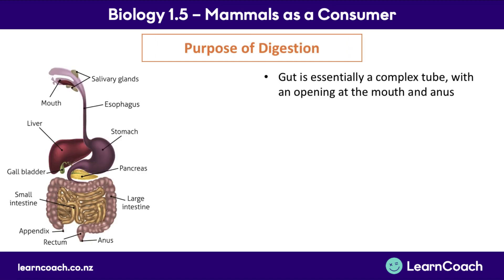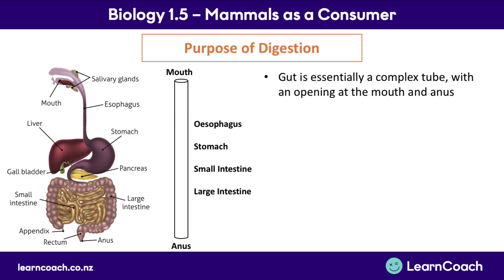Now let's look at the why. The gut is essentially a complex tube with an opening at the mouth and an anus. As the digestive tract moves through the human body, it takes on different names — for example, the esophagus, stomach, small intestine, and large intestine. Because this is an open tube, it's like a deep in-tucking within the human body, so anything we put in our mouths isn't actually within the body — we need to absorb the food we eat in order to gain the nutrients and energy we need.